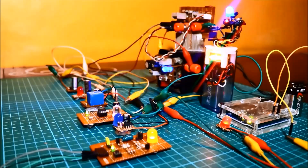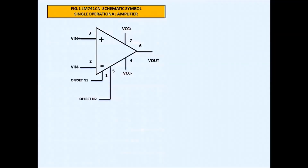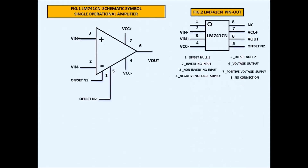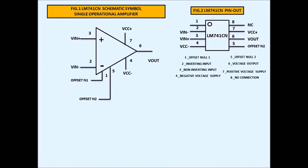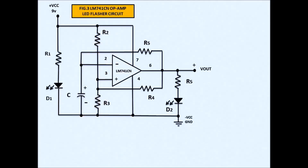Let's make some circuit analysis using PowerPoint. We have the schematic symbol and the pin-out: pin 1 offset null, pin 2 inverting input, pin 3 non-inverting input, pin 4 negative voltage supply, pin 5 offset null, pin 6 voltage output, pin 7 positive voltage supply, pin 8 no connection.